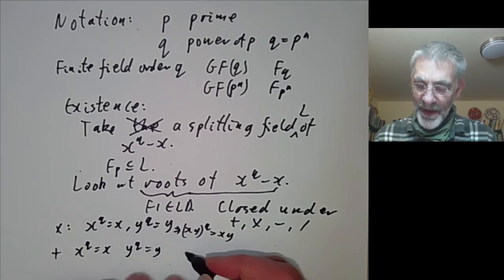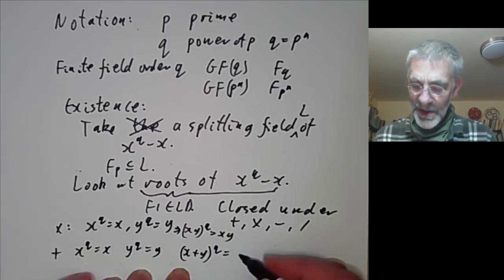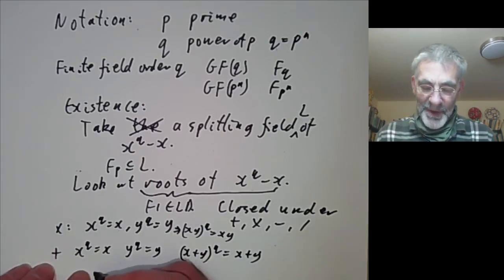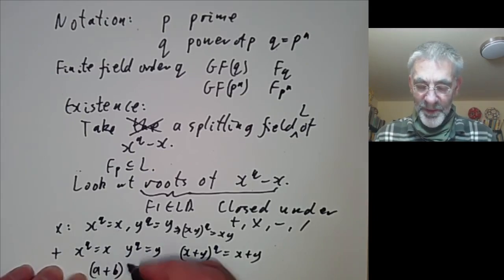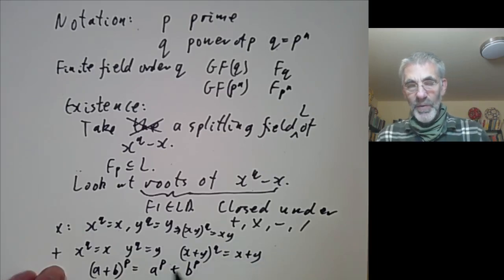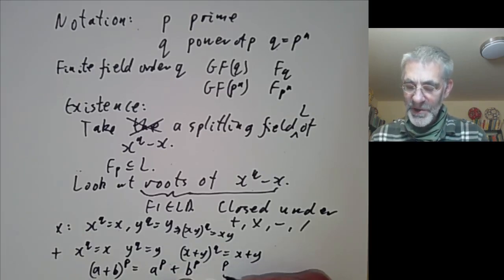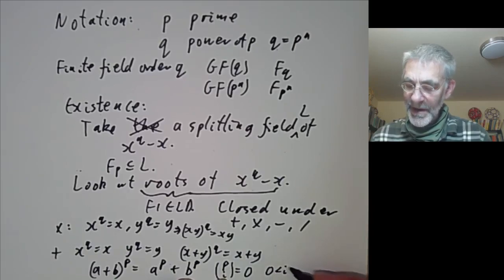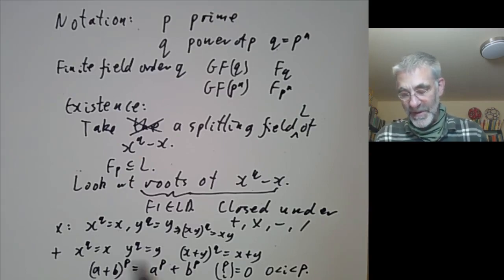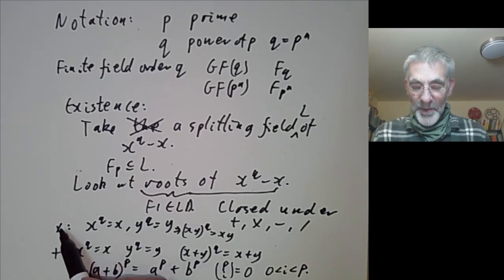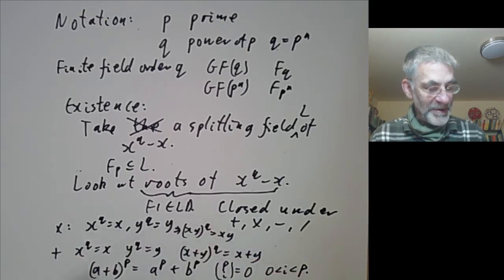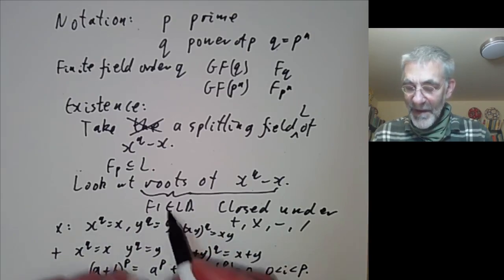Addition is a bit trickier. If x^q = x and y^q = y, then (x+y)^q = x+y as well. This follows because over a field of characteristic p, (a+b)^p = a^p + b^p, since all binomial coefficients p choose i equal zero for 0 < i < p. The same holds when p is replaced by a power q. So the set of roots is closed under addition and multiplication, and is therefore a field.